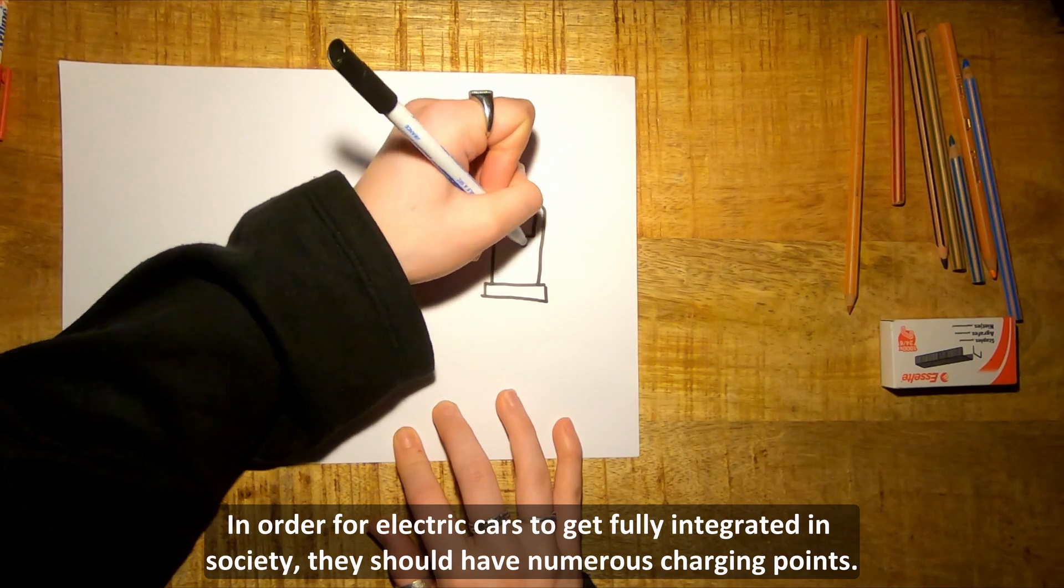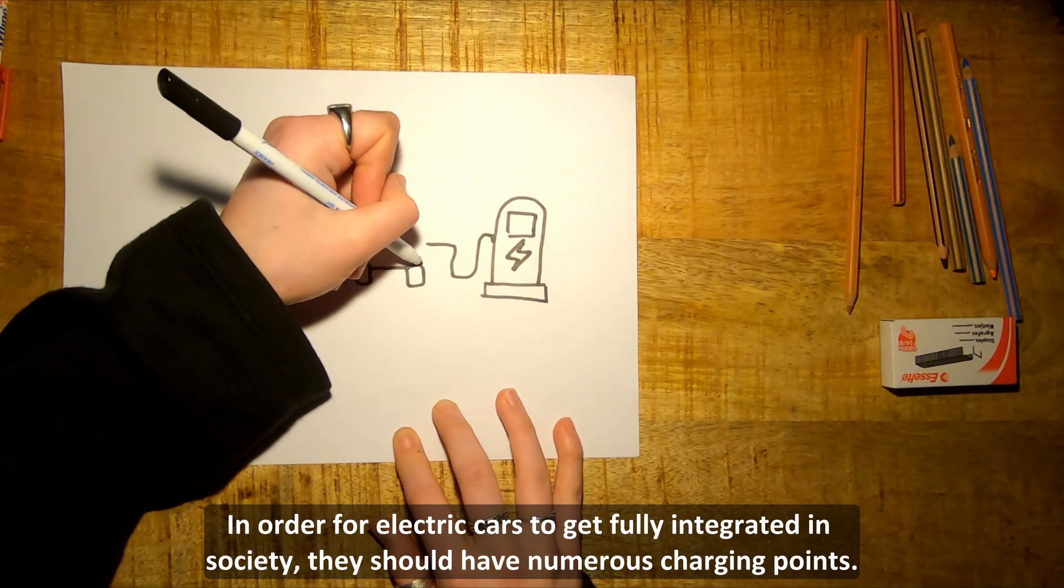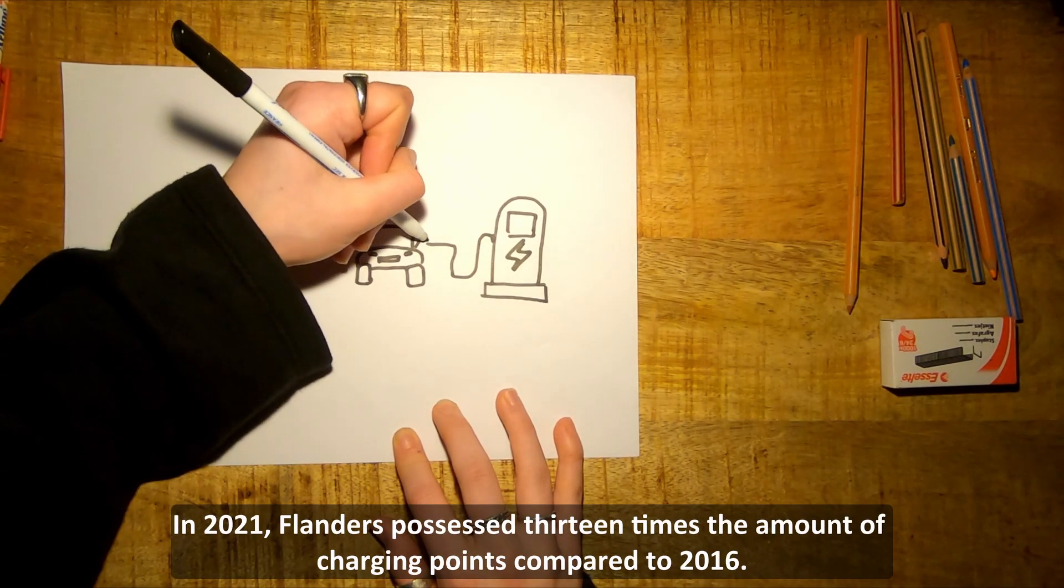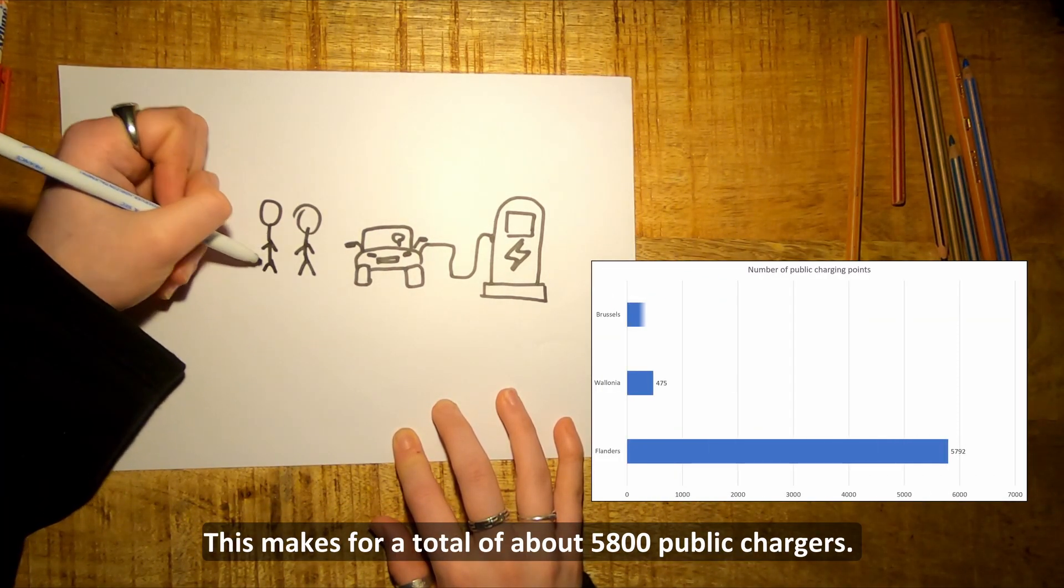In order for electric cars to get fully integrated in society, they should have numerous charging points. In 2021, Flanders possessed 13 times the amount of charging points compared to 2016. This makes for a total of about 5800 public chargers.